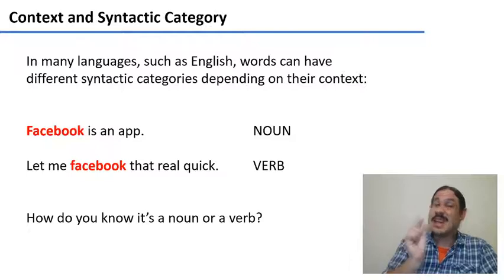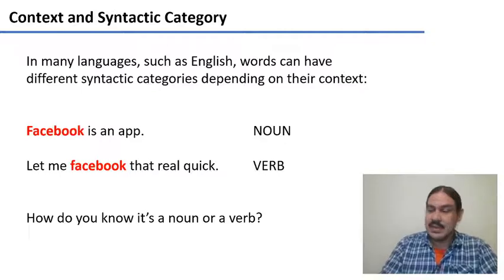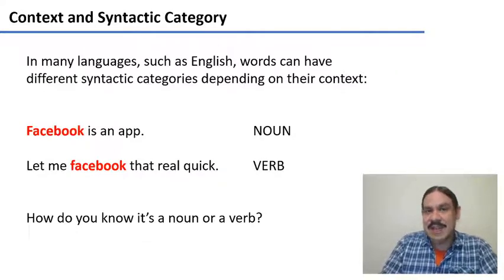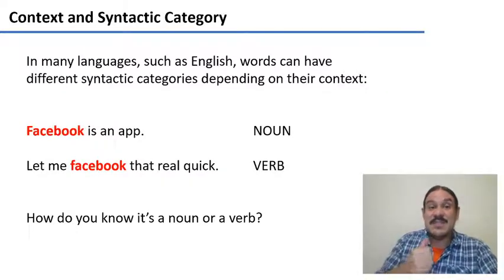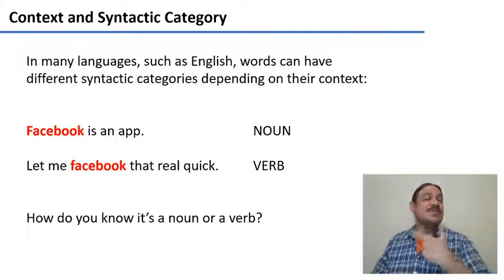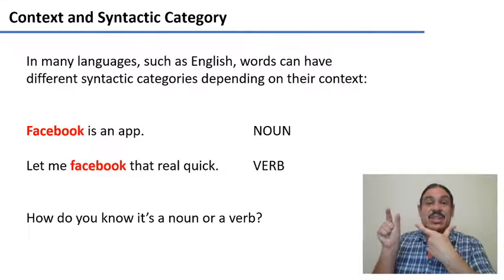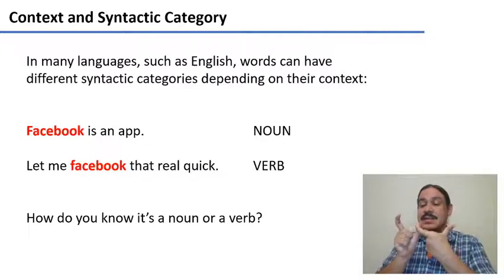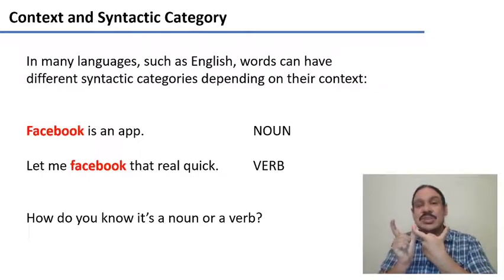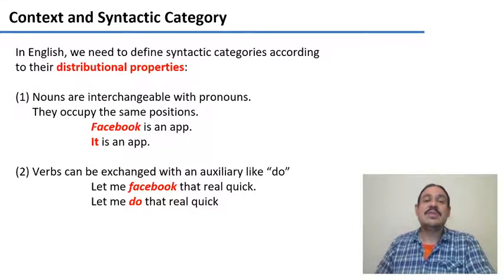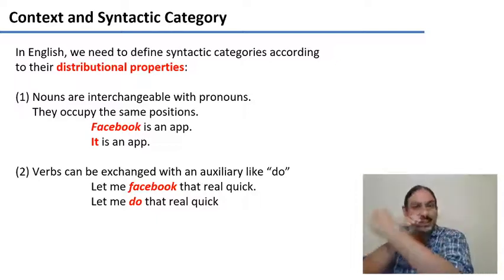On the other hand, English doesn't have those suffixes, so you need to look at the context of a word to figure out what it's doing. For example, here we have the word 'Facebook.' In the first sentence, it's a noun: 'Facebook is an app.' In the second one, it's a verb: 'Let me Facebook that real quick' — it's an action. Sometimes morphology helps: in English, you can say 'I'm Facebooking something,' and the suffix -ing, the progressive aspect, tacks onto Facebook. Since -ing only goes onto verbs, you know that this word is functioning as a verb. But if you don't have any morphology to help you, you might need to look at the word and the other words around it — at its distribution.